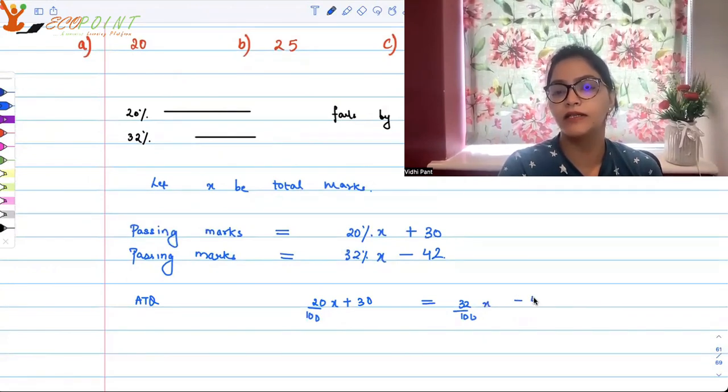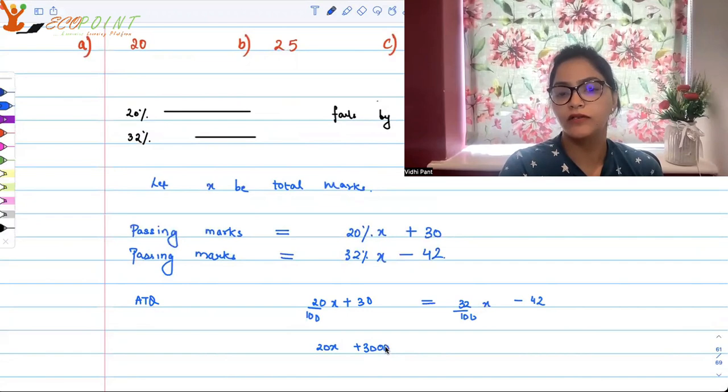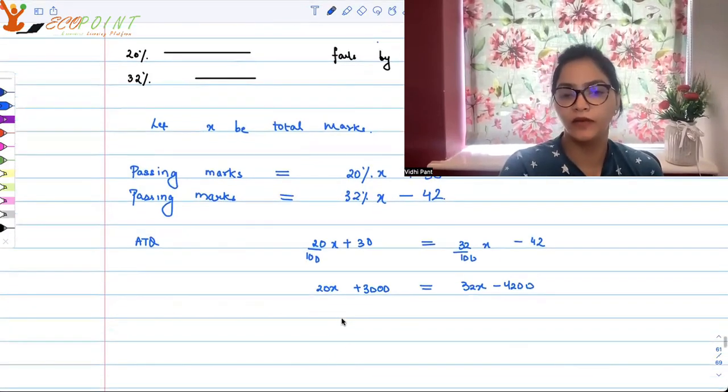Let's solve this. 100 cancels off, so you have 20x + 3000 equals 32x - 4200.